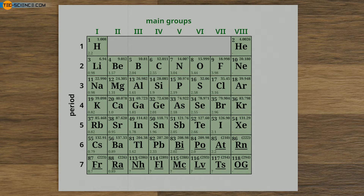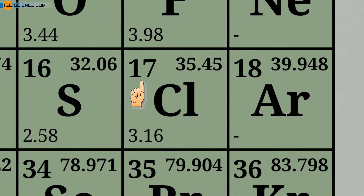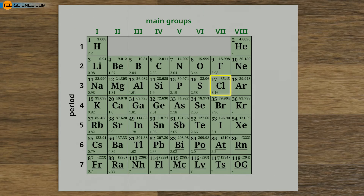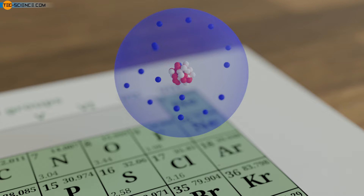The number of protons determines the position of an element in the periodic table and is also called the atomic number. The number of protons in the atom of an element is indicated in the element box in the upper left corner. With an atomic number of 17, a chlorine atom has a total of 17 protons in its nucleus. For an electrically neutral atom, this number also corresponds to the number of electrons in the atomic shell — a chlorine atom thus also has a total of 17 electrons.